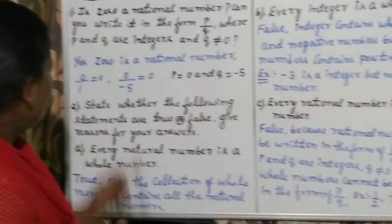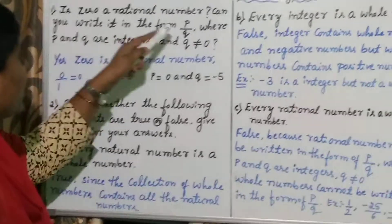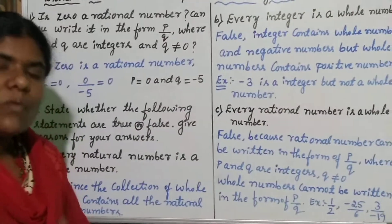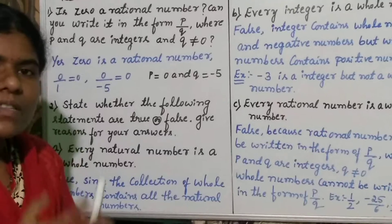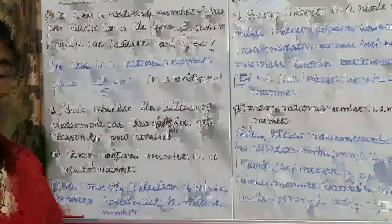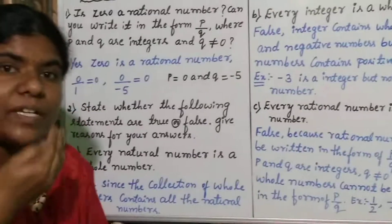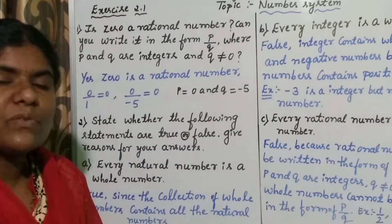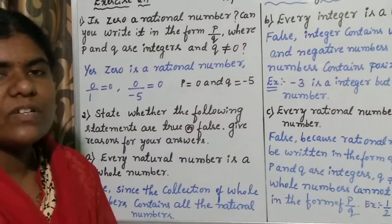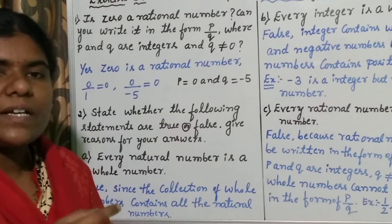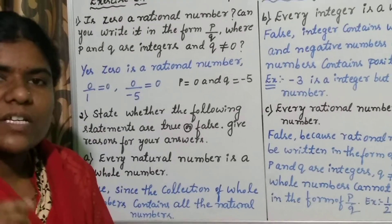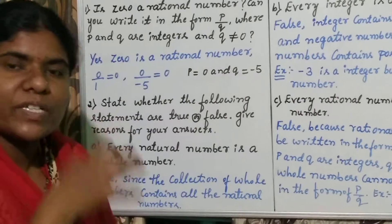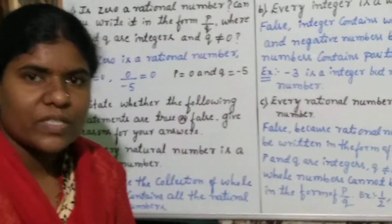Observe carefully children. What is the statement saying? Is 0 a rational number? First of all, what do you mean by rational numbers? The numbers which can be written in the form of P by Q, where P and Q are integers — both positive numbers and negative numbers — and Q does not equal to 0.